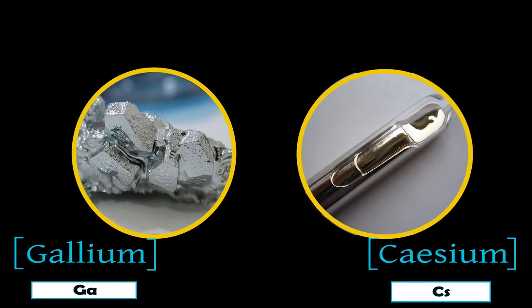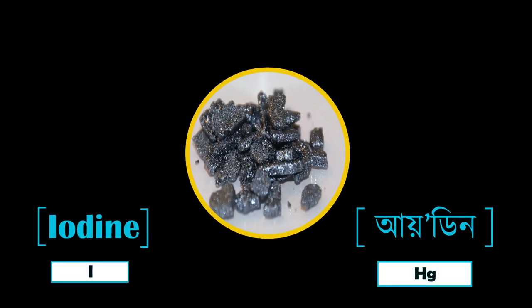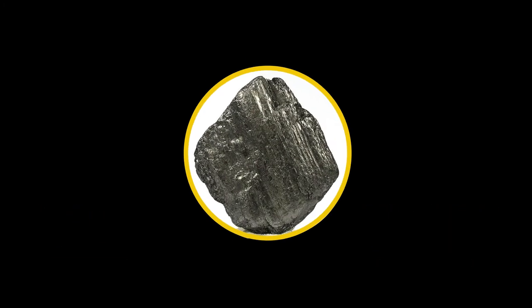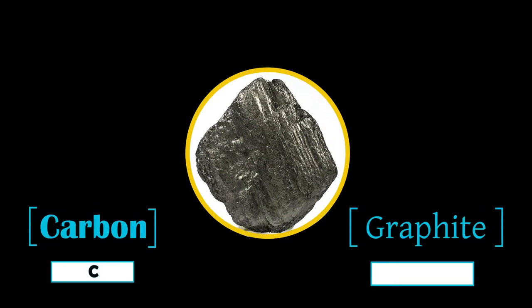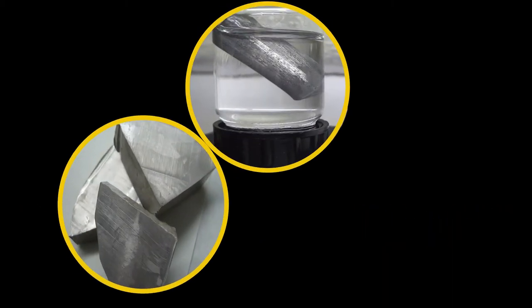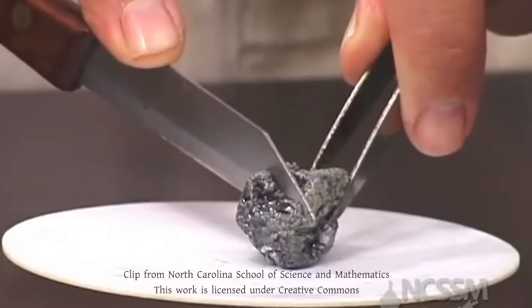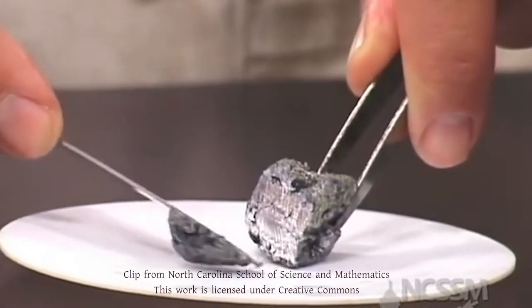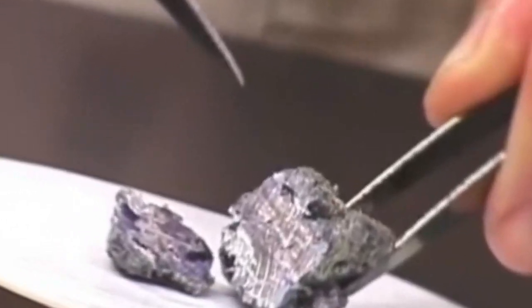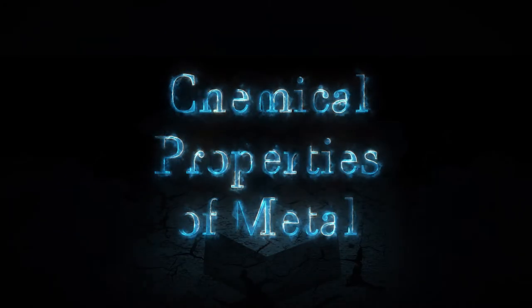The melting point of gallium and cesium is very low. Iodine is a non-metal but it is lustrous. Graphite, the allotrope of carbon, is a conductor of electricity. Metals like lithium, sodium, and potassium are so soft that they can be cut with a knife.